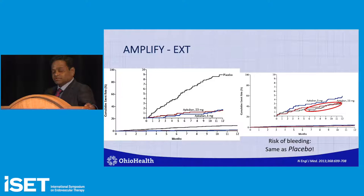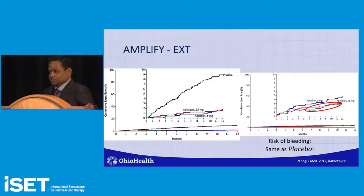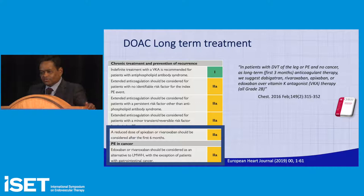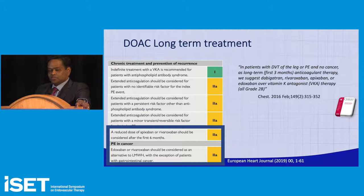These trials brought recurrence risk down further — close to general population risk, around 2%. Since those two trials, more patients in my practice are on long-term anticoagulation. Long-term treatment recommendations from both CHEST and ESC guidelines recommend use of low-dose rivaroxaban or apixaban after the first three to six months. Edoxaban and rivaroxaban are also acceptable in PE with cancer.